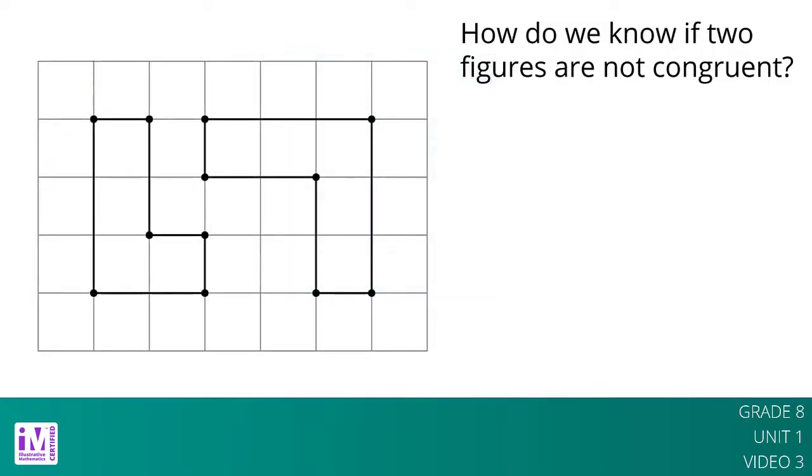Let's consider some other polygons. If there is no correspondence between the figures where the parts have equal measure, that proves that the two figures are not congruent. In particular, if two polygons have different sets of side lengths, they cannot be congruent.